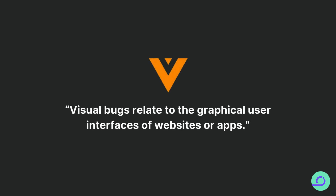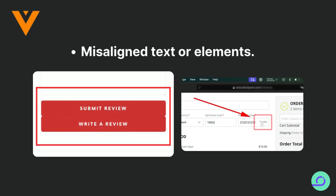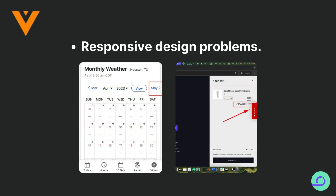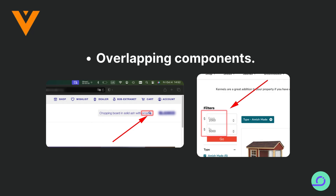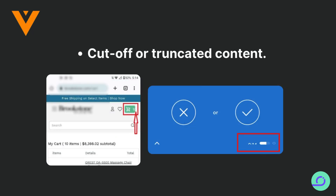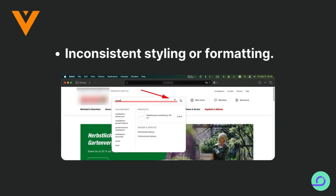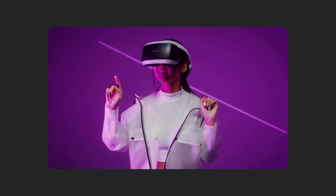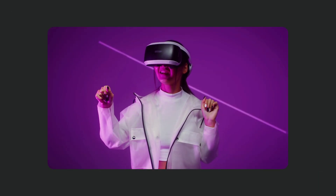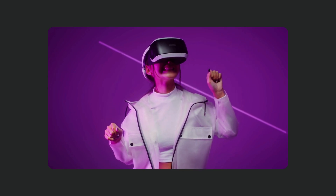Defining visual bugs. Visual bugs are discrepancies or errors in the graphical user interface of a digital product. These include, but are not limited to: misaligned text or elements, responsive design problems, overlapping components, cutoff or truncated content, and inconsistent styling or formatting. As a tester, your attention to detail is crucial in identifying these issues, which often reside in HTML or CSS files.